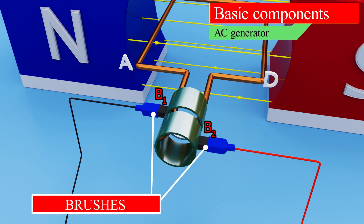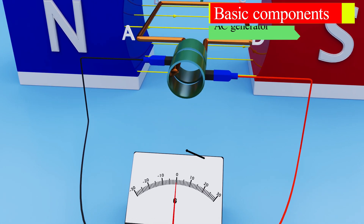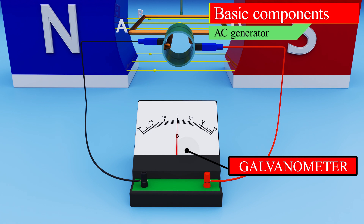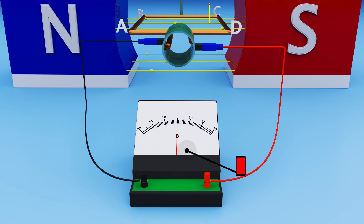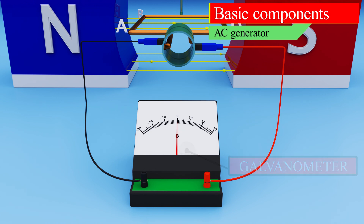Brushes B1 and B2 are usually made of carbon. One end of each brush is in contact with the rotating slip ring and the other end is connected to the outer circuit. The galvanometer is connected to the outer circuit, and its purpose is to show the flow of current in the external circuit.